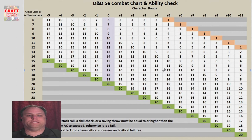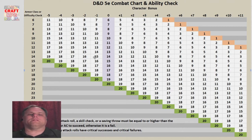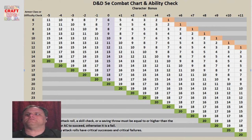So they take their D20, they roll it, they find the column with their character bonus — whatever the bonus is: the attack roll, the saving throw, the skill check. They scroll down to find their D20 roll and then they look right across to the left hand column and say I hit armor class whatever that number is, or my saving throw roll is whatever that number is. So it's a very simple table to use.